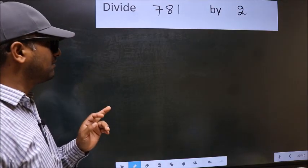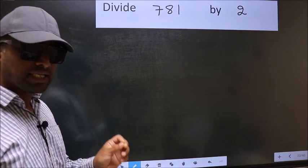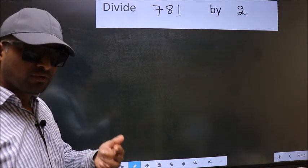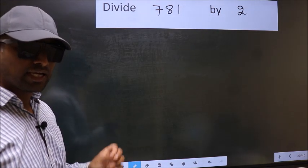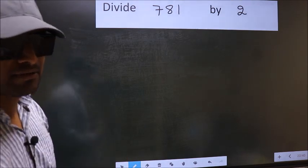Divide 781 by 2. While doing this division, many do this mistake. What is the mistake that they do, I will let you know. But before that, we should frame it in this way.